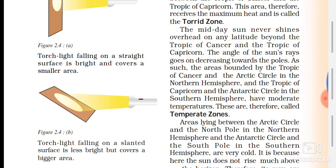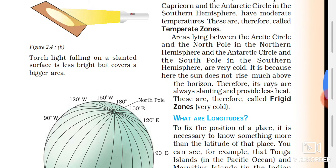Then comes the temperate zone. The midday sun never shines overhead beyond the Tropic of Cancer and the Tropic of Capricorn. The angle of the sun's rays goes on decreasing towards the poles, so the rays are less direct, and that zone is called the temperate zone.